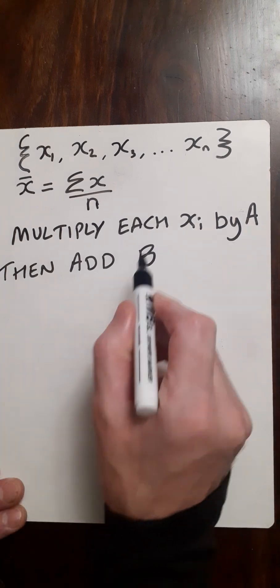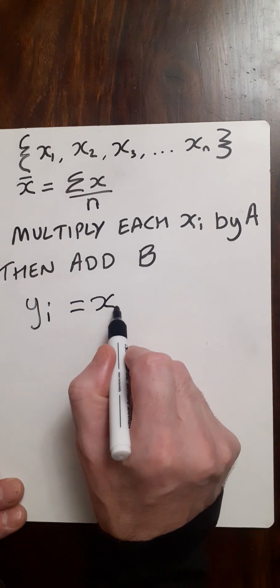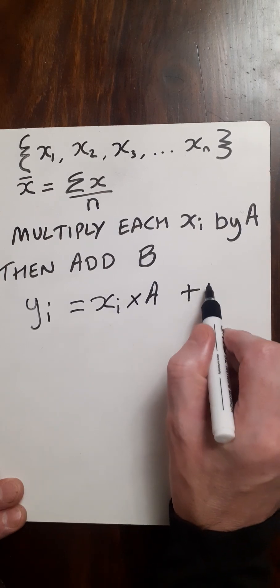So then we could transform each xi into a yi, so that will be xi times A plus a constant B.